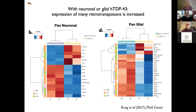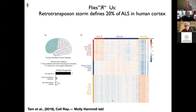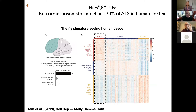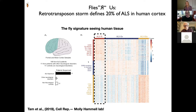I'll focus on one element here, which has been called gypsy. There is a move to change the name because this is considered to be an ethnic slur against the Romani people, so I will refer to it by its former name, MDG4. I want to first show you that what we're seeing in the fly is also seen in postmortem tissue. This was in collaboration with Molly Hamill's lab. What she observed in postmortem motor cortex from ALS subjects is that a substantial fraction of them was defined by overexpression of retrotransposons, much as we had observed in the fruit fly. In fact, this subset of tissues were the ones with the greatest degree of TDP-43 proteinopathy.